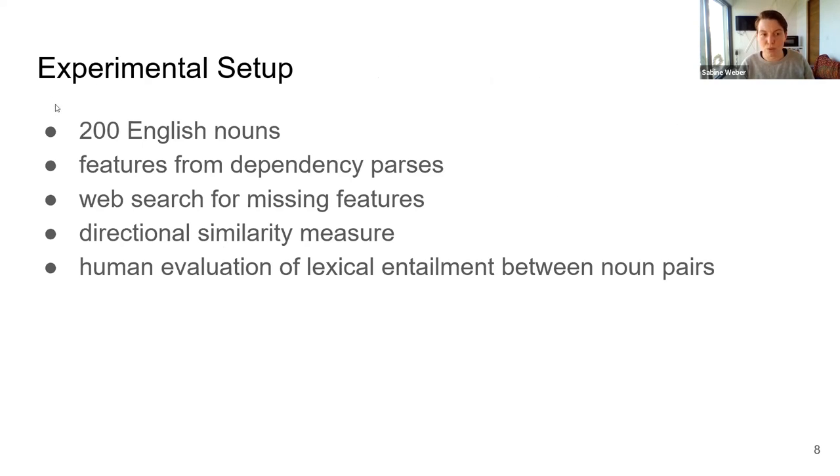Geffet and Dagan went ahead testing this hypothesis with an experiment. First of all, they took 200 high-frequency English nouns. Then they went ahead to create these vectors where the features of the vectors represent the context of the noun. It was important for them to note that context here does not mean kind of a bag of words, but features or words that modify the noun in dependency parses.